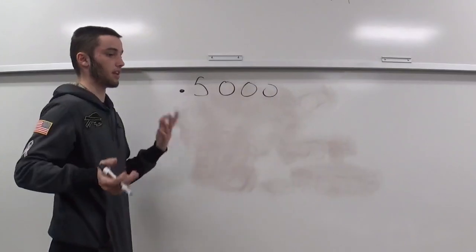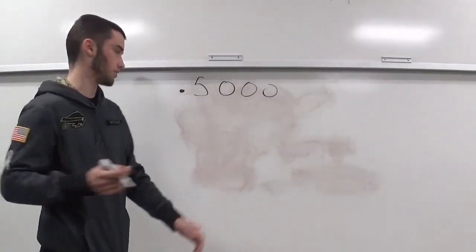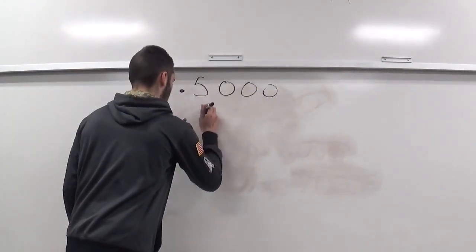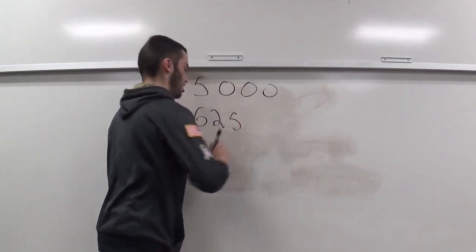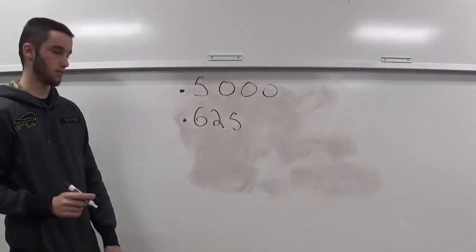If you wanted six hundred twenty-five thousandths, that would look like .625, six hundred twenty-five thousandths.